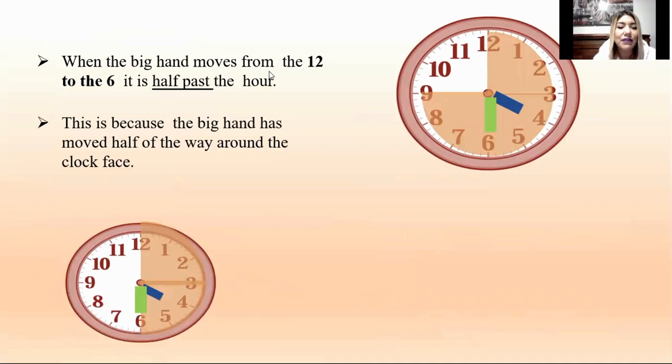After that, when the big hand moves from the twelve to the six, it is half past the hour. This is because the big hand has moved half of the way around the clock face. Cuando movemos la flechita grande desde las doce hasta las seis, eso lo vamos a llamar half past, que es la llamada dos y media, tres y media, cuatro y media.